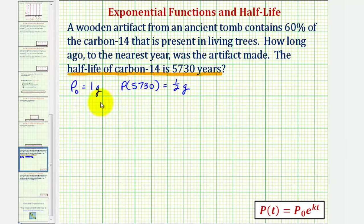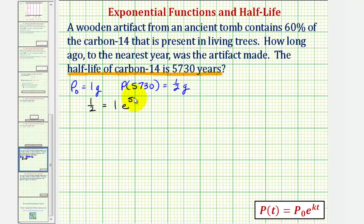With this information, this gives us the equation one-half equals one times e raised to the power of k times 5,730, so our exponent is 5,730k. We're starting with one gram, and after 5,730 years we have half a gram because the half-life is 5,730 years, and now we'll solve this for k.